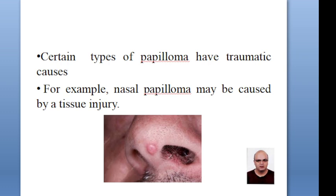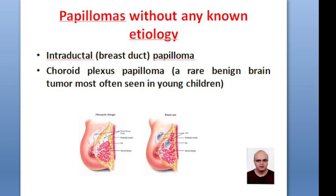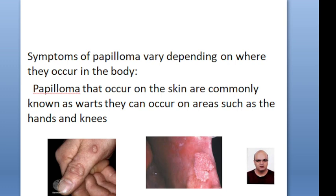Certain types of papillomas have traumatic causes. For example, nasal papilloma may be caused by tissue injury. Papillomas without any known etiology include intraductal papillomas and choroid plexus papilloma, which is a rare benign brain tumor commonly seen in young children.